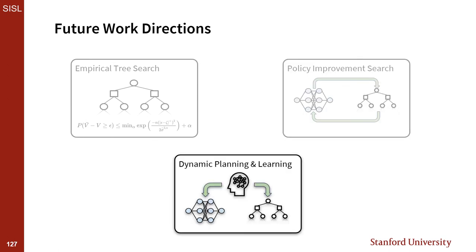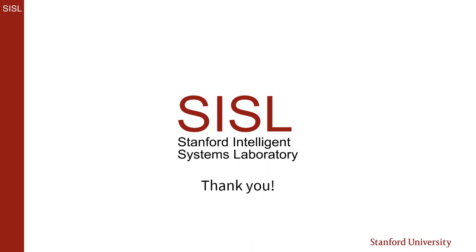The final recommendation is dynamic planning and learning. In the work presented, the decision of when to use a neural network policy versus when to conduct a Monte Carlo tree search was always treated as given. However, for many situations we would like to avoid the potentially computationally expensive Monte Carlo search process whenever possible, and always rely on the reactive, typically cheaper-to-query neural network policy whenever prudent. Future work should develop meta control policies that, with awareness of policy uncertainty, can decide when to trust the neural network versus when to conduct refinement through Monte Carlo tree search. That is the end of my talk. Thank you for your attention. If you have questions about anything presented here or anything else in my thesis or related works, please feel free to reach out at the correspondence email provided.